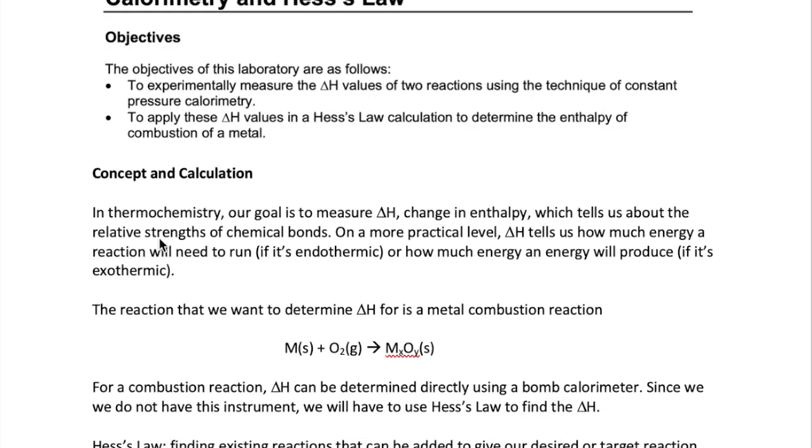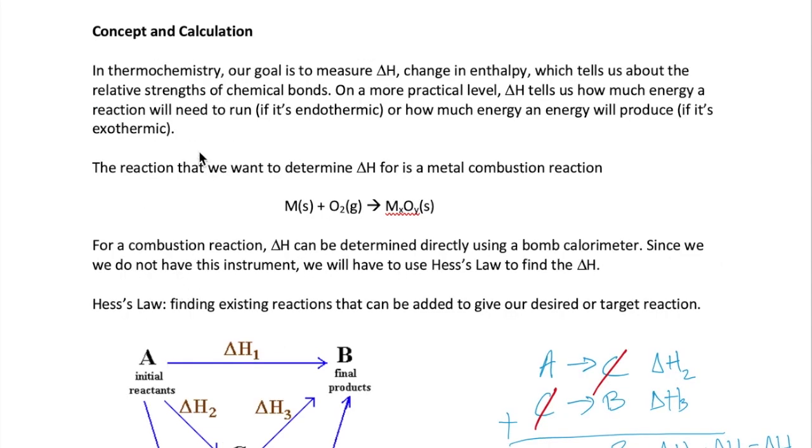Let's start by reviewing why we measure delta H. There are two pieces of information we get from delta H. One is that the value of delta H tells us the relative strengths of chemical bonds of the reactants and products. On a more practical level, delta H tells us how much energy a reaction needs to run if it's endothermic, or how much energy the reaction produces if it's exothermic. As a result, determining delta H values for chemical reactions is one of the most critical experiments to do.